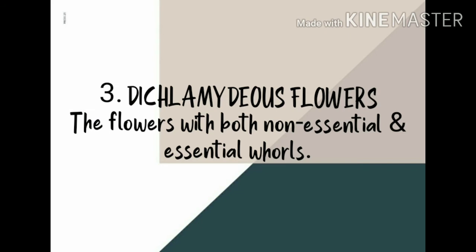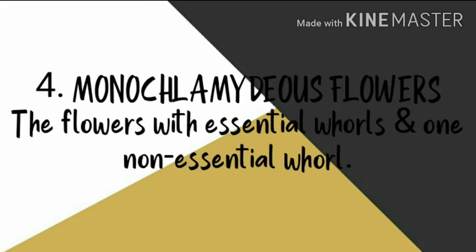The third type in this classification is dichlamydous flowers. These are flowers which contain both essential as well as non-essential whorls. I will teach you what essential and non-essential whorls are in our next video, where we'll learn about the parts of a flower in detail. The fourth type is monochlamydous flowers. 'Mono' means only one — so the flower has essential whorls but only one single non-essential whorl, whereas dichlamydous flowers have both.